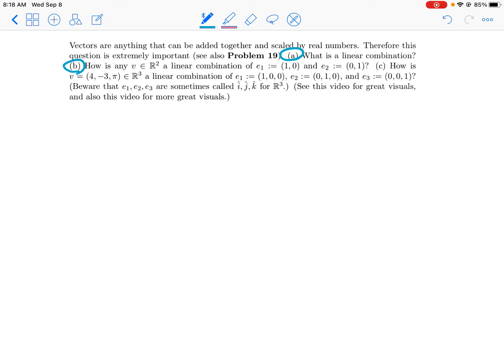(b) How is any v in the plane R² a linear combination of e1 and e2? (c) How is v, this specific v, a linear combination of e1, e2, e3, which are sometimes called i hat, j hat, k hat? Okay, so actually I'm going to wait on part (a) because part (b) seems maybe a better way to start.